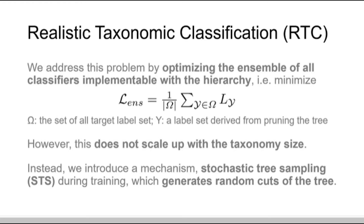We address this problem by optimizing the ensemble of all classifiers implementable with the hierarchy. However, this is only feasible for small taxonomies, but does not scale up with the taxonomy size. Instead, we introduce a mechanism, stochastic tree sampling during training, which generates random cuts of the tree.